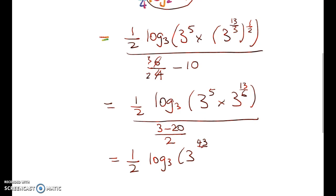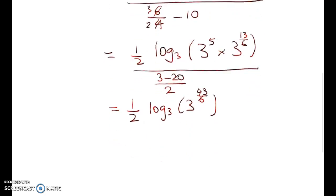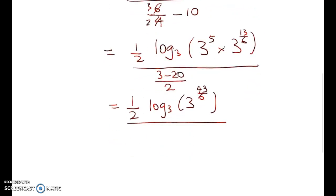So we have a half log to base 3 of 3 to the power of 30 over 6, plus 13 over 6, gives me 43 over 6. I said these were easy, I didn't say they were beautiful and elegant, because they definitely are not.